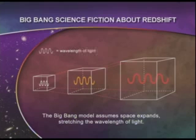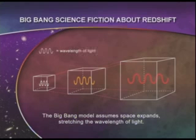As this illustration shows, space-time expansion assumedly causes light to be redshifted as it travels across the universe, independent of the Doppler effect. This idea was adopted over 70 years ago but remained untested until David and I did so and found proof it has always been wrong.